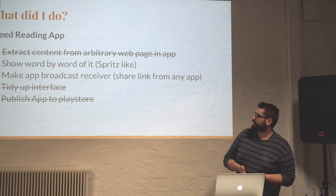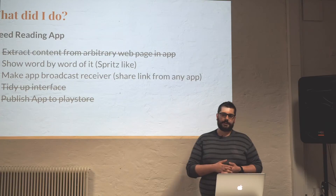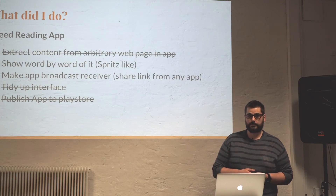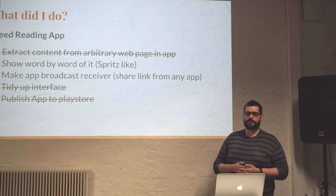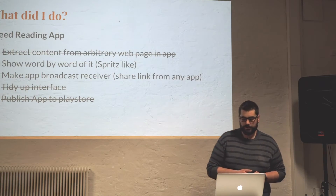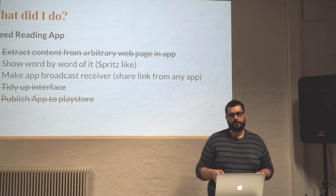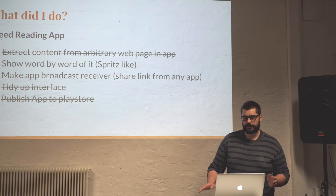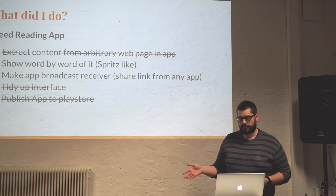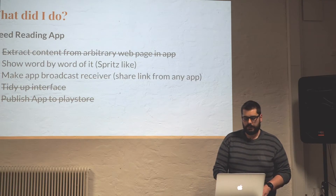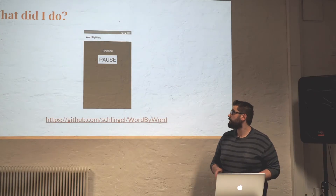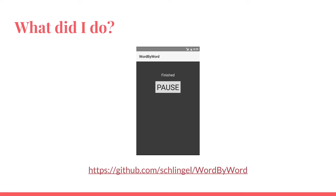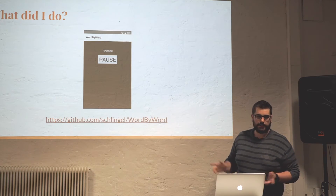That's what worked out. The content extraction turned out harder than I thought. I had done content extraction in Java and JavaScript before, so I thought it should be easy — but it wasn't. Because of the problems I had, I just finished the basic functionality of doing speed reading with an arbitrary link. The actual content extraction uses a web service. The app: if you share a web page, the app opens, you hit start, word by word shows, and after you're finished, it looks like that. The code is open source — you can look at it in my Schlingel repository.